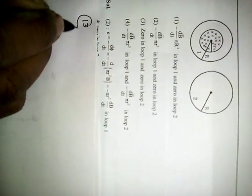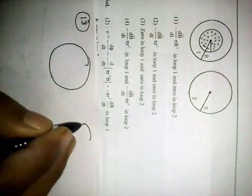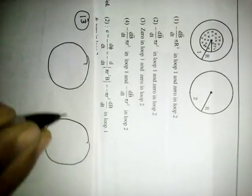In question number 13, it is saying there are two loops of radius R.